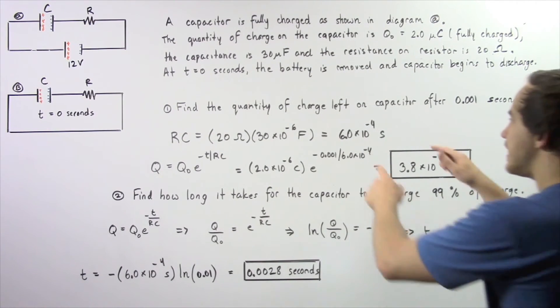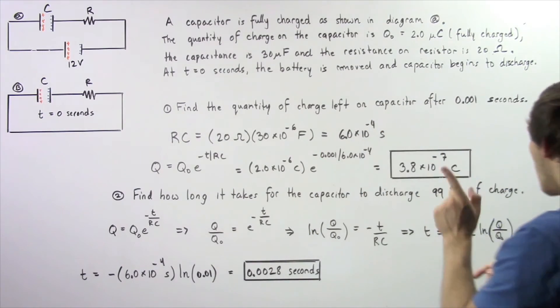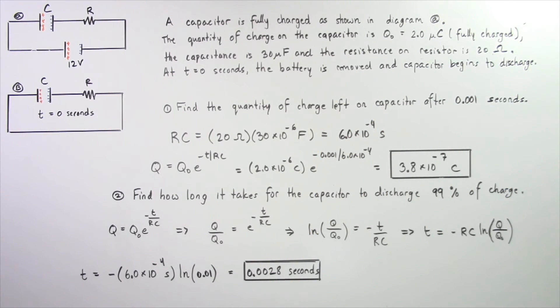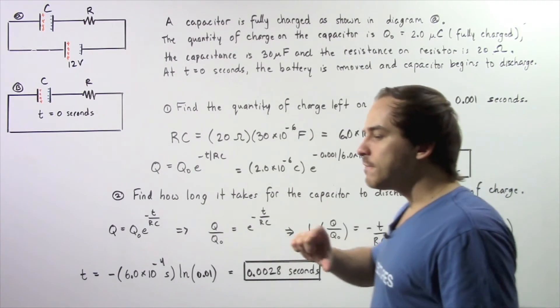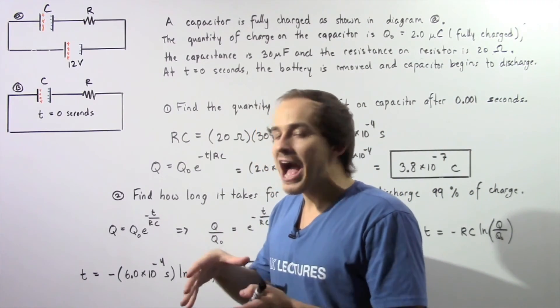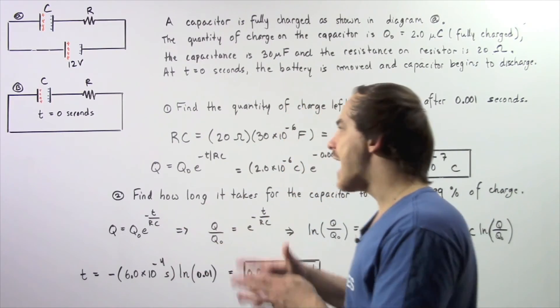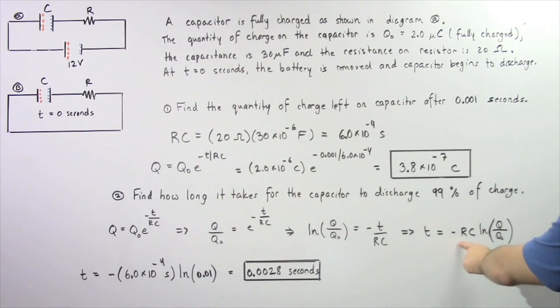Now we know what R times C is, it's this quantity, and we know what Q divided by Q naught is. Q divided by Q naught is simply the fractional ratio of how much electric charge is left on our capacitor, which is equal to 0.01.